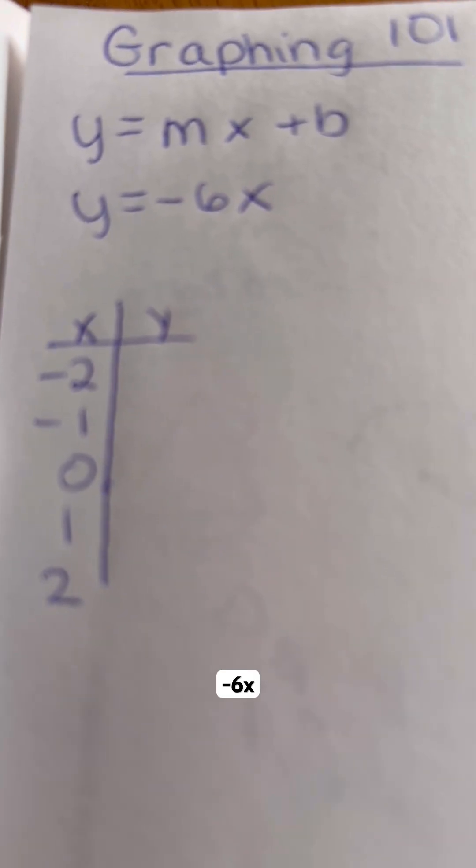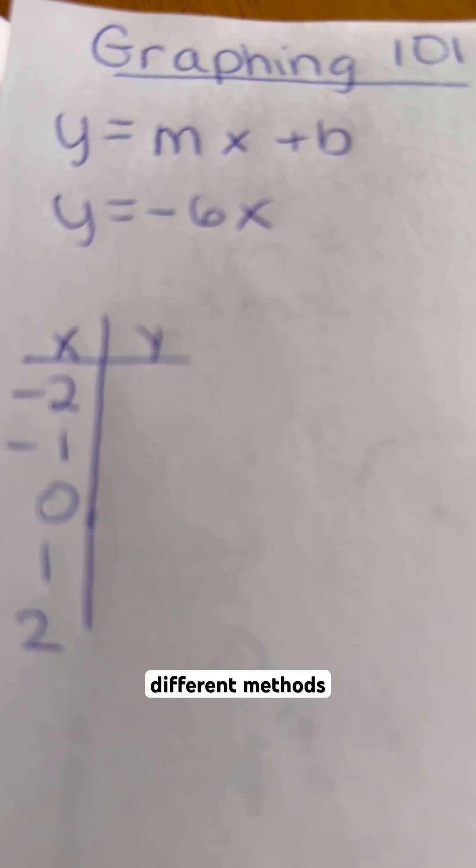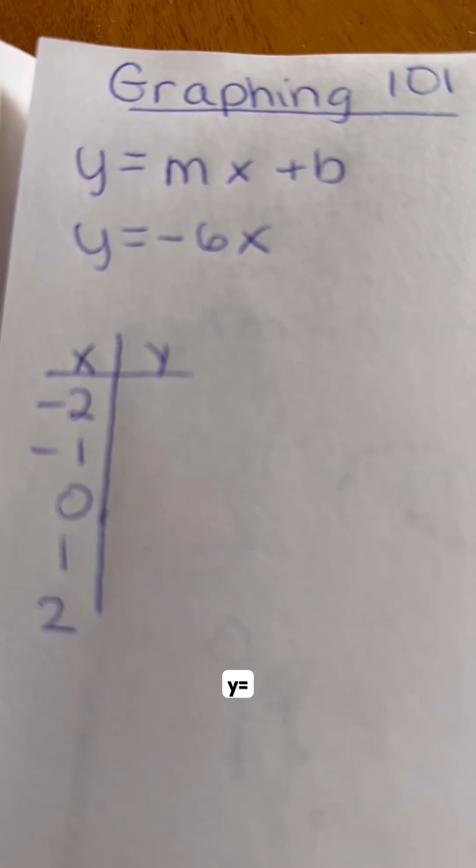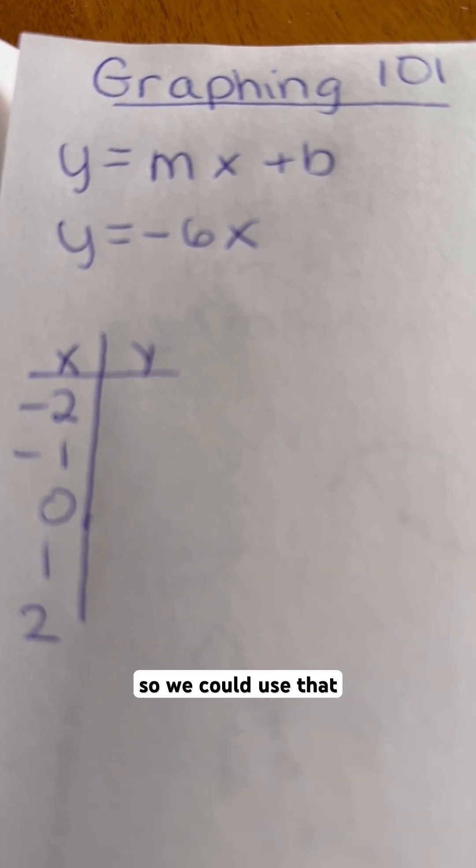I am going to take a look at the equation y equals negative 6x. She asked about how to graph this, so I'm going to show you two different methods that you can use. We'll start off with the equation y equals mx plus b. That is how you graph a linear equation.